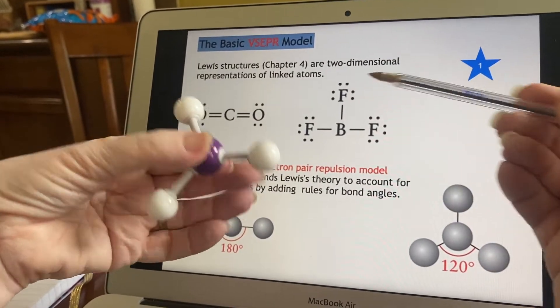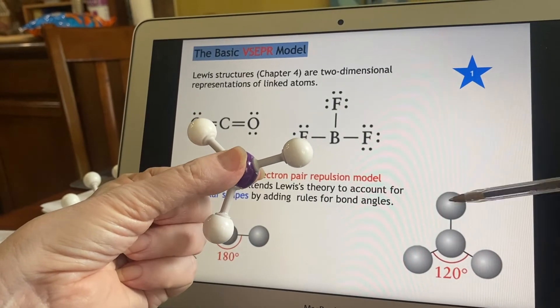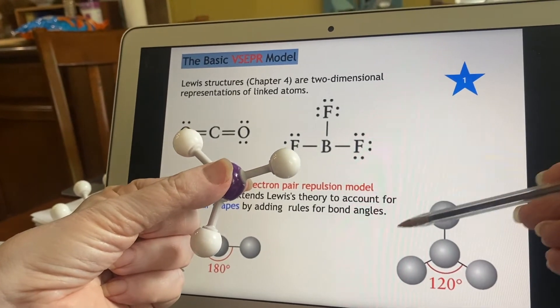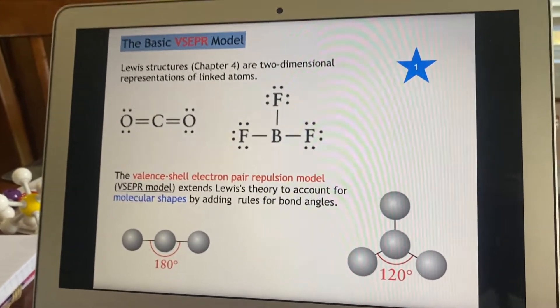And that's the same thing that's going on with the 120 degree. Instead of this, it should look like this because they're going to try to push apart. And the farthest they can get from each other is 120 degrees. Now, I also have a star on here. So let's talk about that.